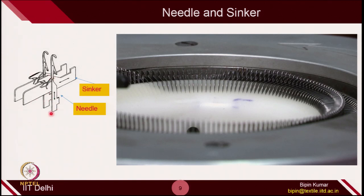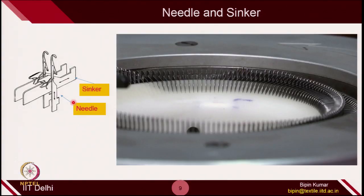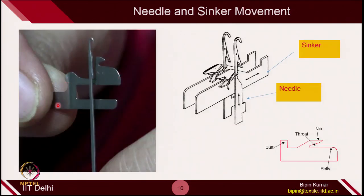These two elements perform reciprocative movements during the knitting process. The needle moves in upward movements while the sinker moves in the radial direction — it comes out and goes inside on the cylindrical platform along the radius. The direction is shown in the arrows: the needle direction is vertical and the sinker is going in the radial direction. This is the actual sinker element you can see here. There are many sinker designs available.